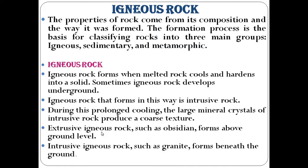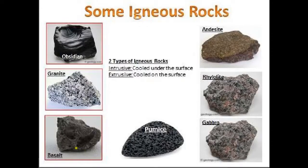Extrusive igneous rock, such as obsidian, forms above ground level, while intrusive igneous rock, such as granite, forms beneath the ground level. So beneath the ground we find intrusive rock, whereas extrusive rock is found at the ground level.